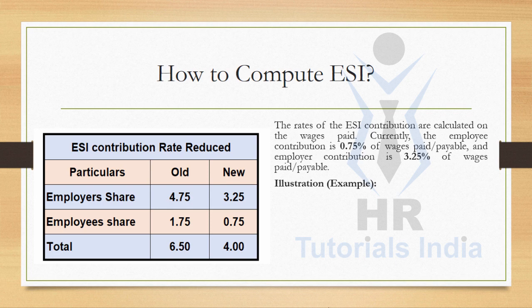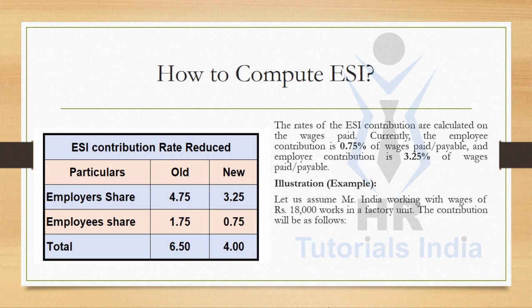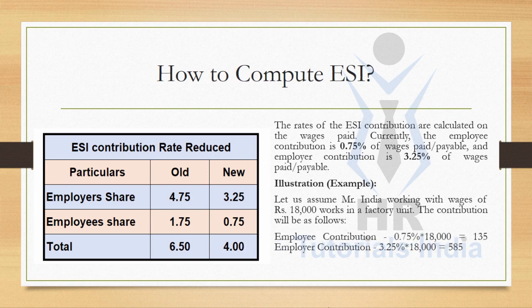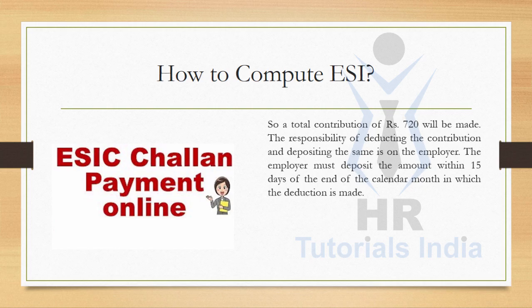Let us see an example of how ESI is computed. Let us assume Mr. India is working with wages of 18,000 in a factory unit. As the salary is less than 21,000, Mr. India is eligible for ESI. Employee contribution is 0.75% of 18,000, which is Rs. 135, and employer contribution is 3.25% of 18,000, which is Rs. 585. The total contribution is 4% of 18,000, which is Rs. 720.